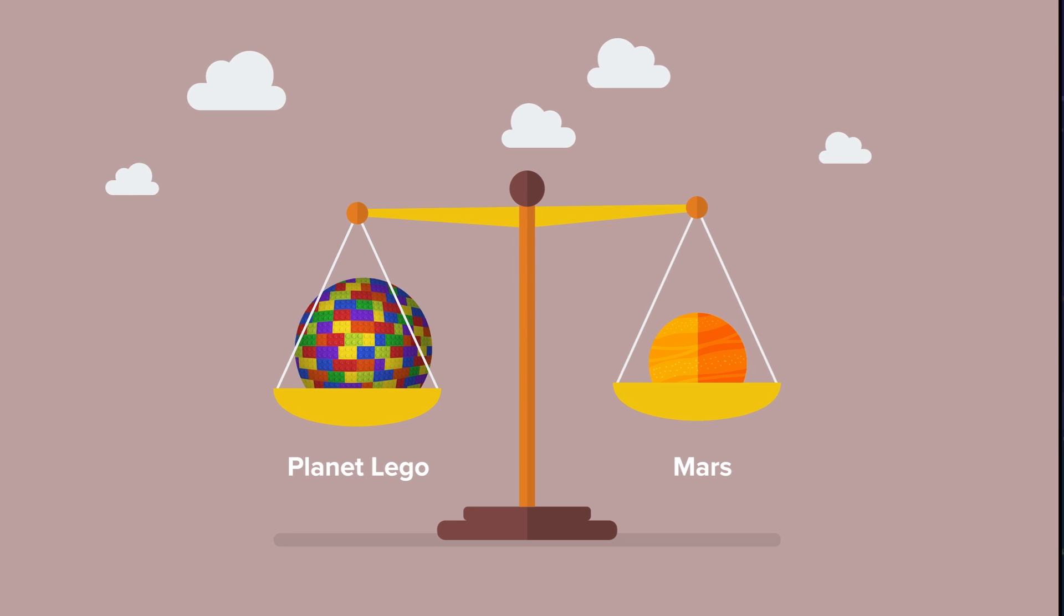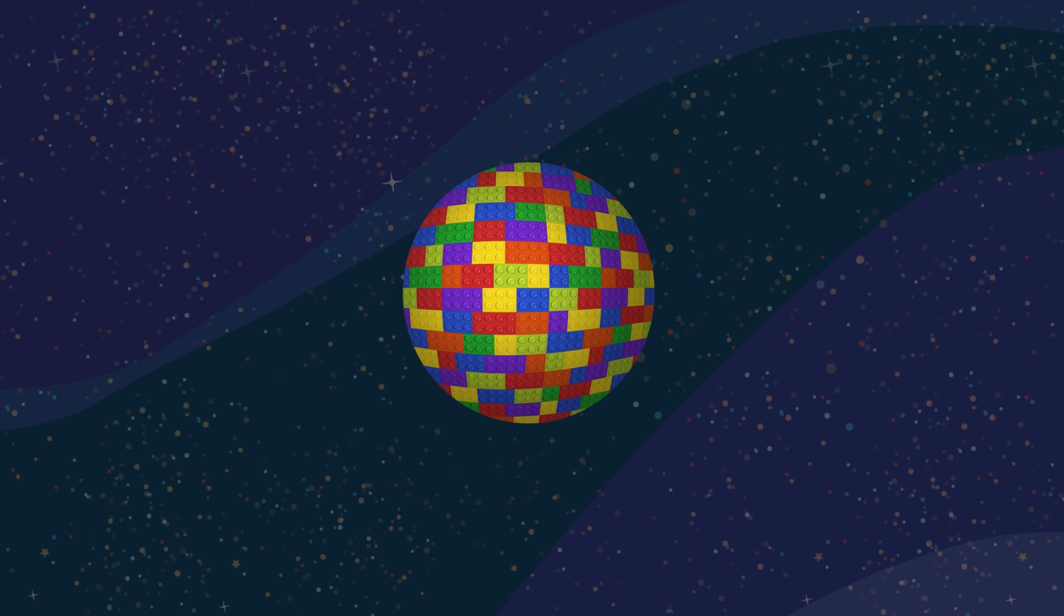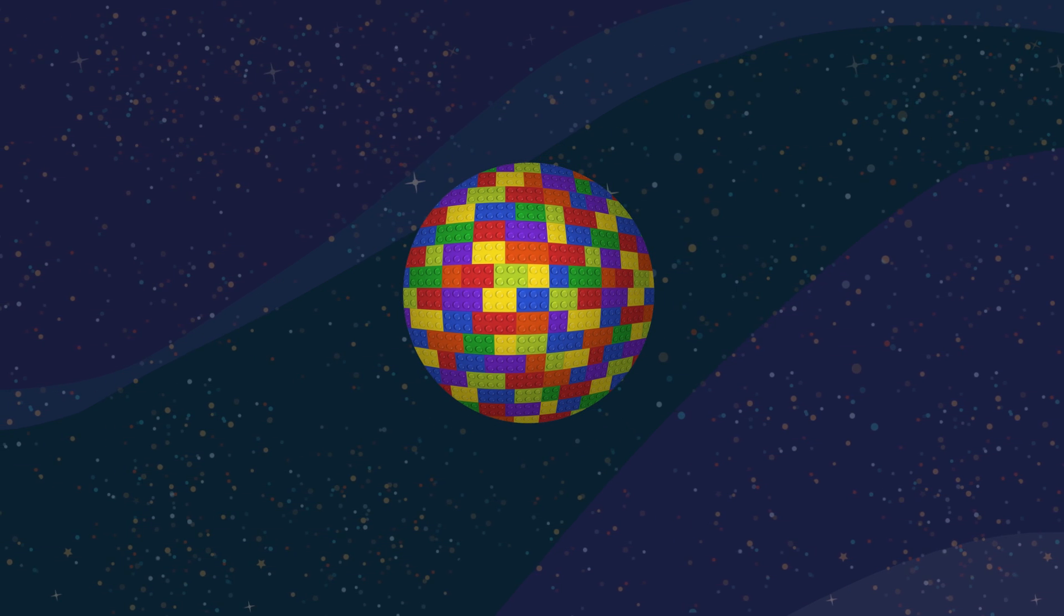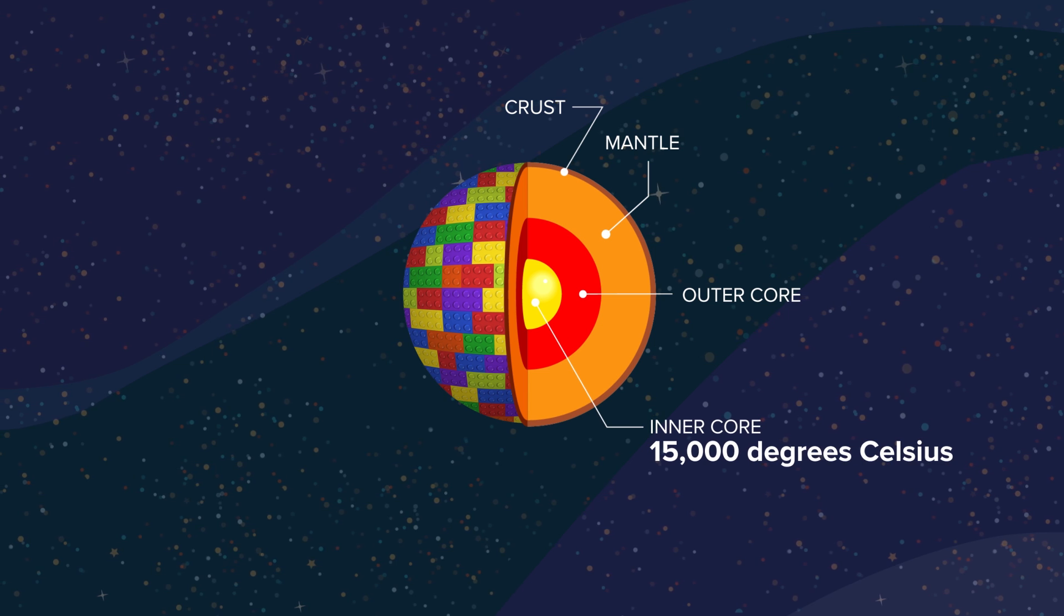Lego bricks are about half-empty space, so our Lego Earth will shrink over a thousand kilometers as it squeezes out all those gaps. In the process, the friction and warping of the plastic and the pressure all conspire to heat the bricks to 15,000 degrees Celsius.